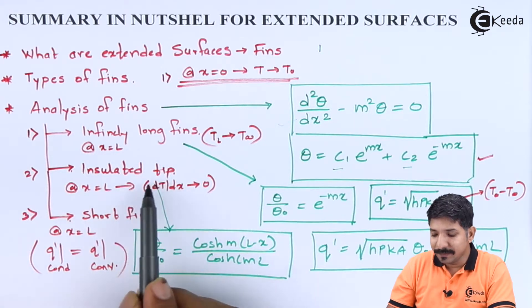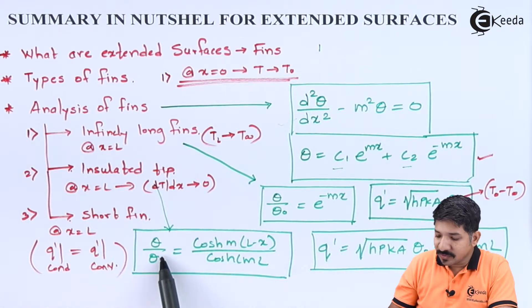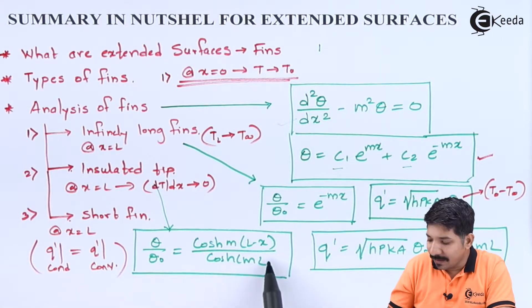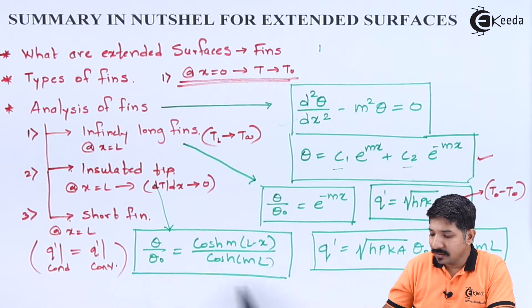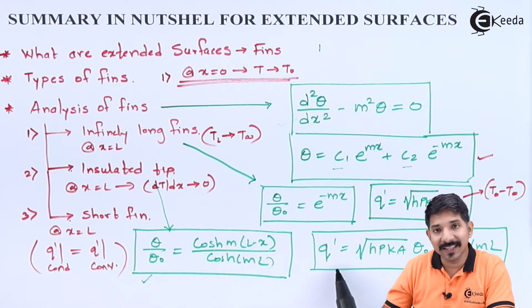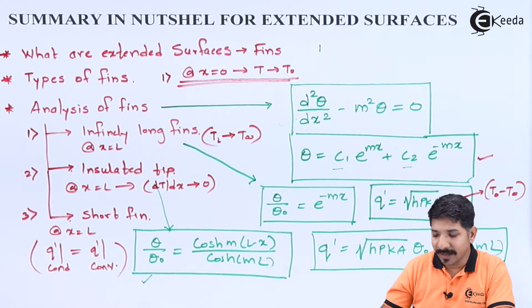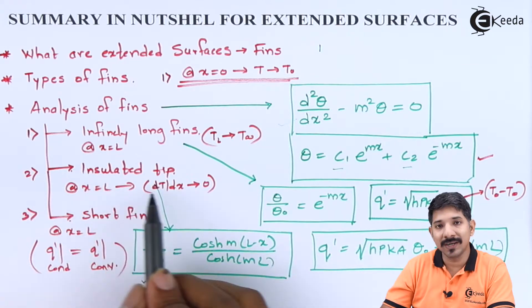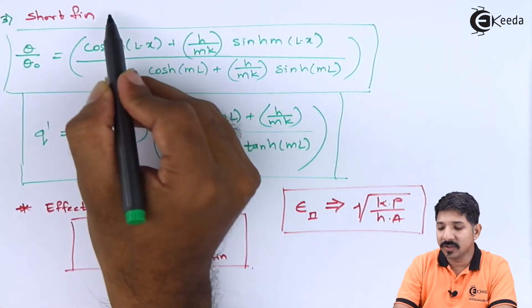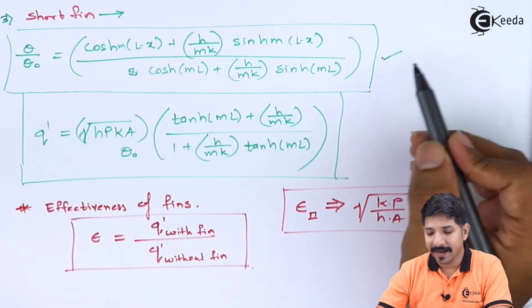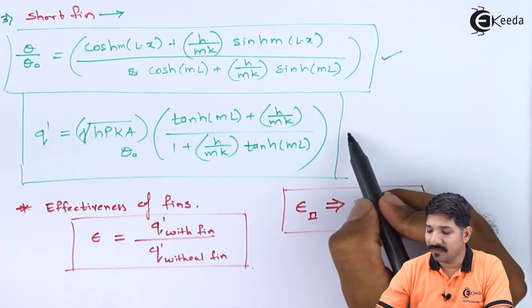For the second case where the tip is insulated, the temperature distribution is θ/θ₀ = cosh(m(L−x)) / cosh(mL), and the heat transfer rate is q = √(HPKa) · θ₀ · tanh(mL). For the third case — the short fin — the temperature distribution and heat transfer rate expressions follow a similar but more complex form.